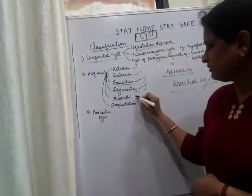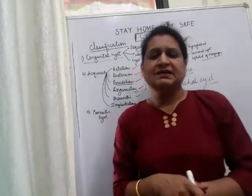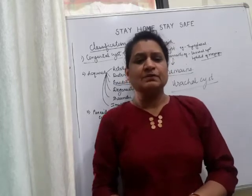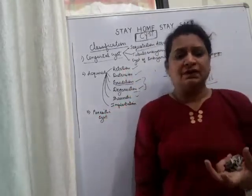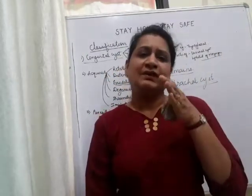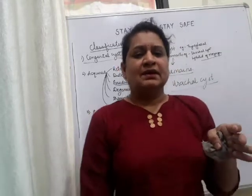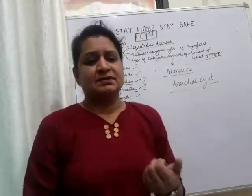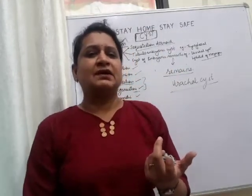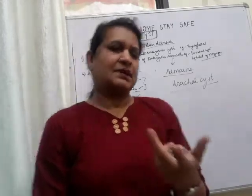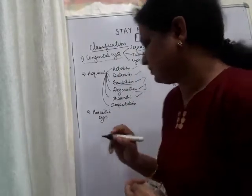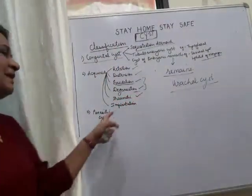Next is the traumatic cyst, which occurs due to trauma. When there is trauma, a hematoma forms, and that hematoma presents like a cyst. A lining of endothelium forms around it. This is a traumatic cyst containing brown-colored fluid — the fluid is brown because there is bleeding inside it.